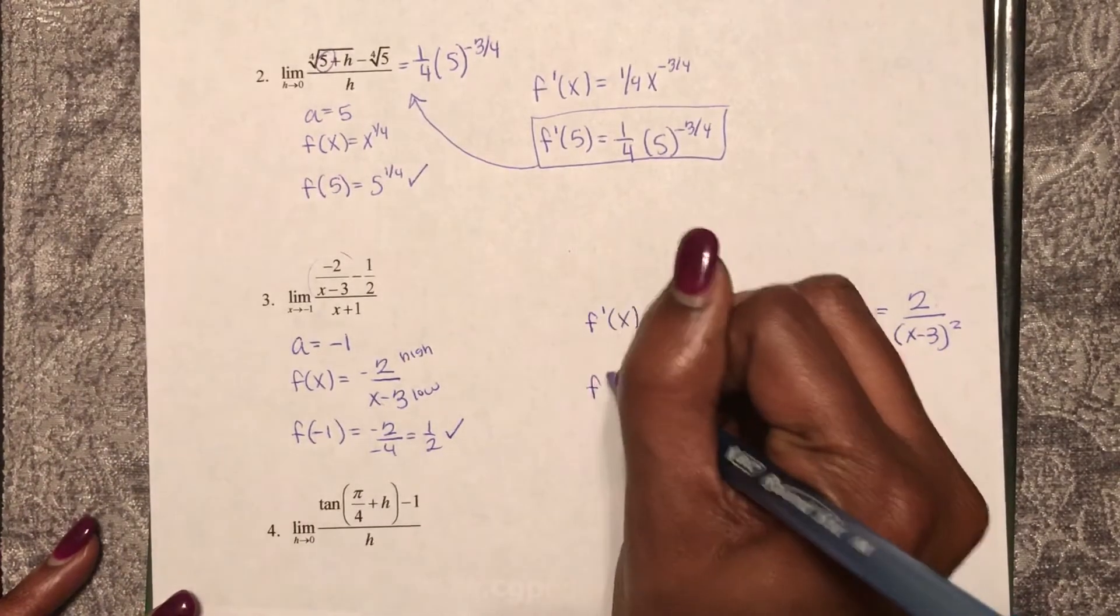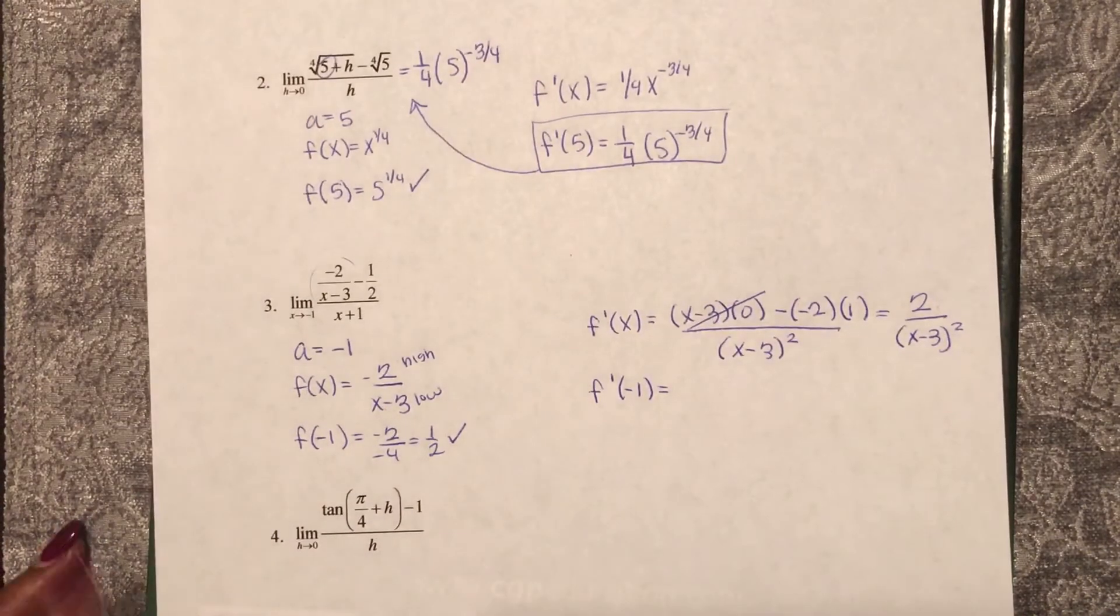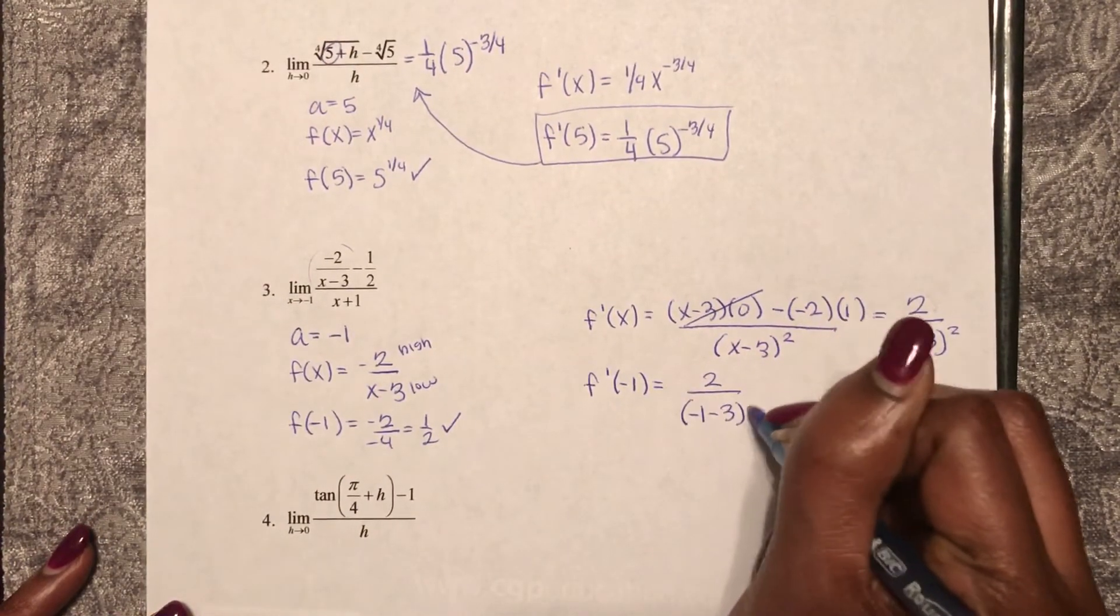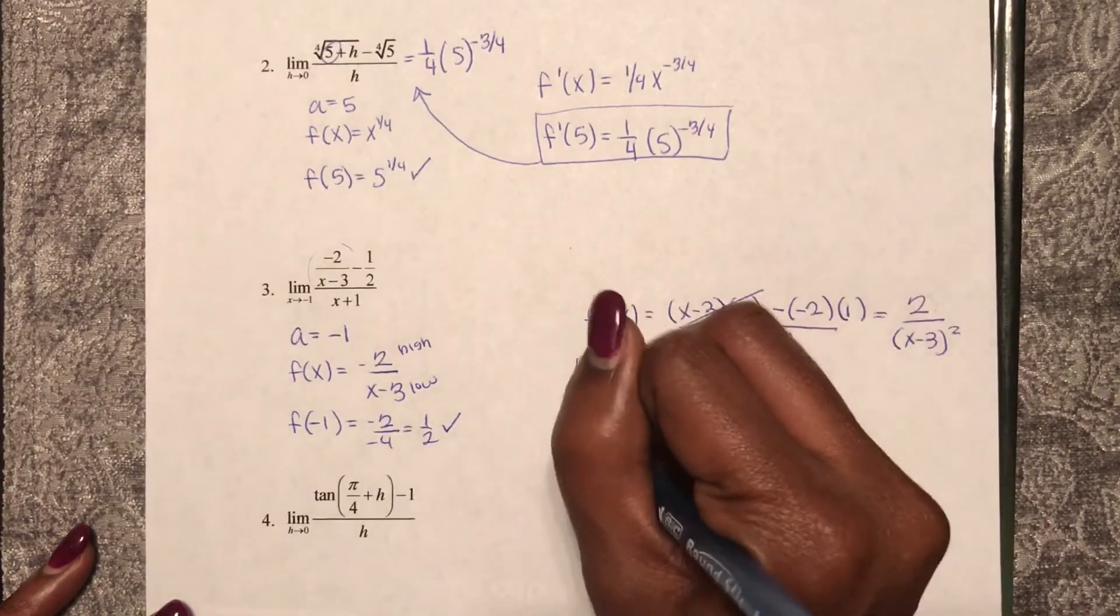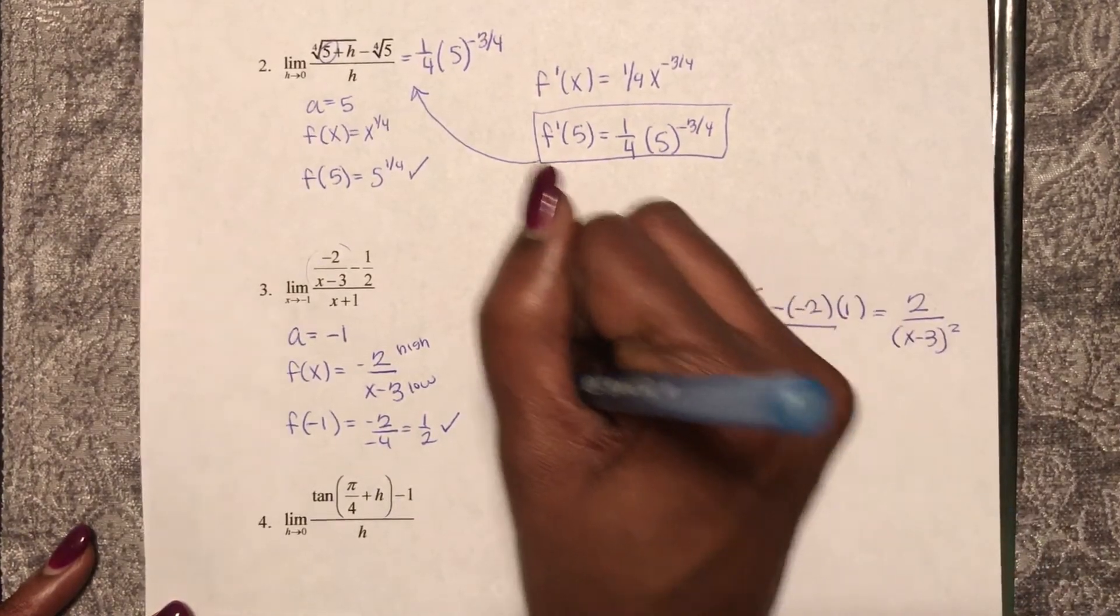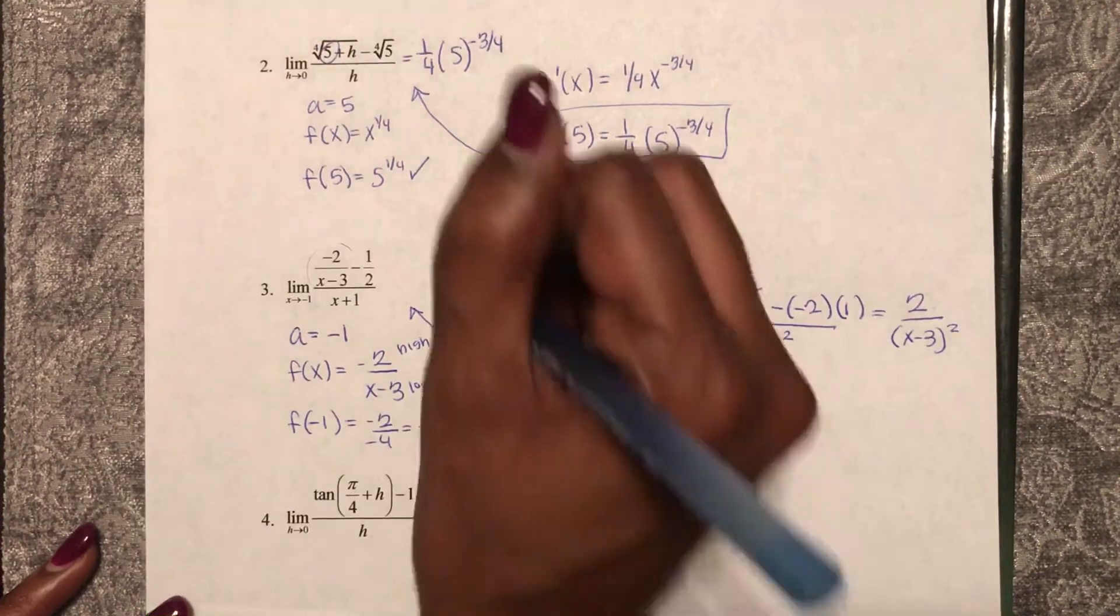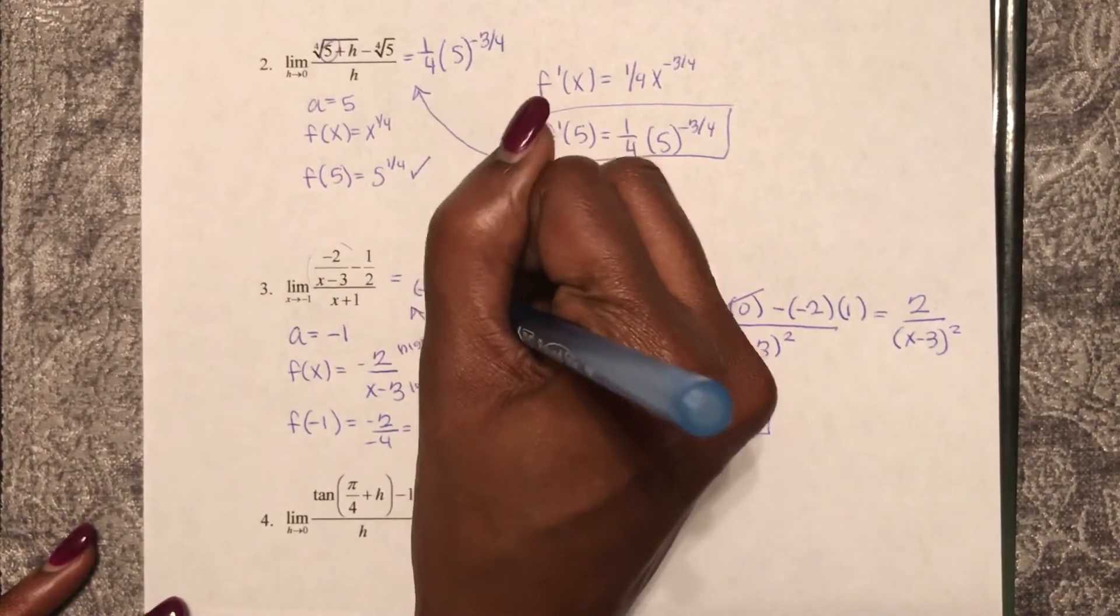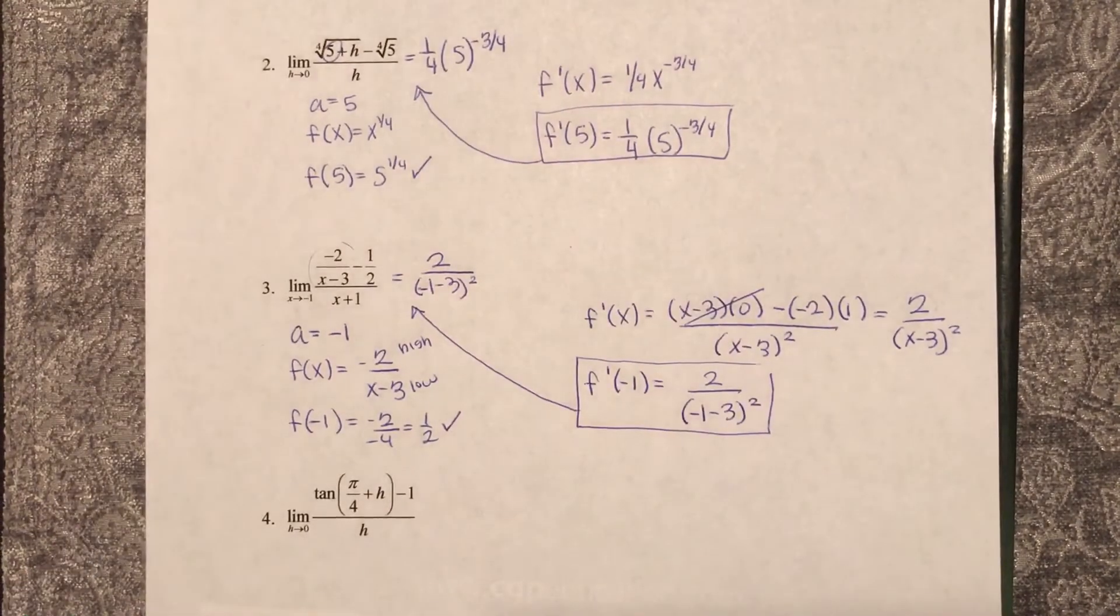So f prime of negative 1, I'm just plugging negative 1 into this function, 2 over negative 1 minus 3 squared. So this is evaluating this limit as a derivative. And once again, this is not simplified, but acceptable for the AP.